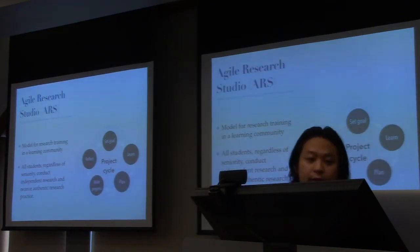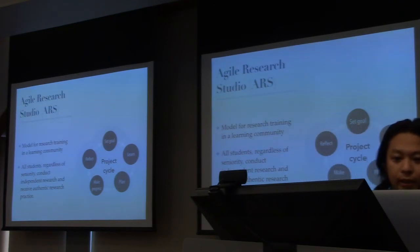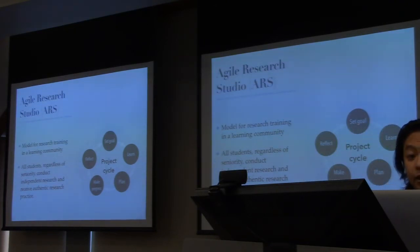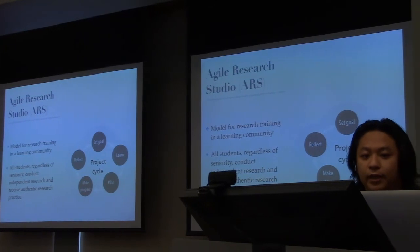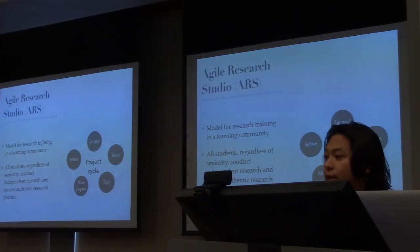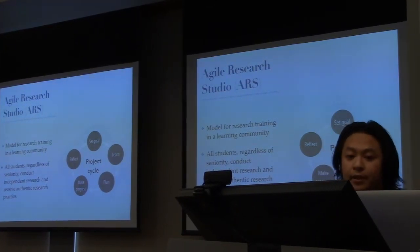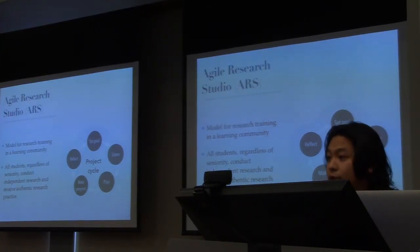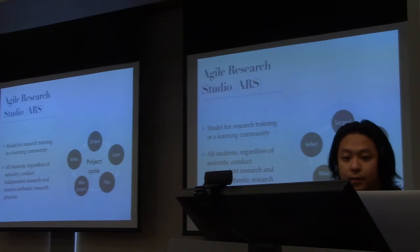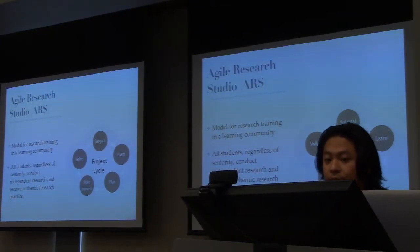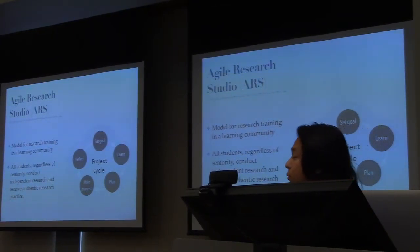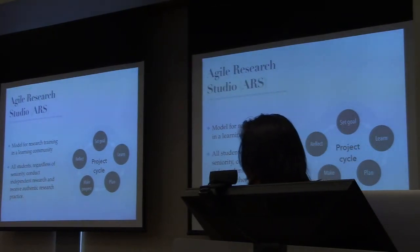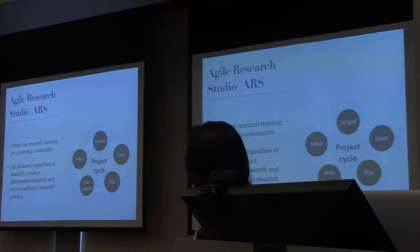The argument I'm making is that there's got to be a better way to help students develop more effective processes to be independent in research, and that starts with training students explicitly in regulation skills. To address this challenge, we created a computational ecosystem called Agile Research Studios, which provides a model for research training in a learning community. In this model, all students, regardless of seniority, conduct independent research and receive authentic research practice.